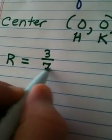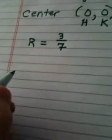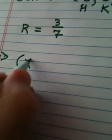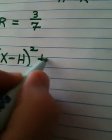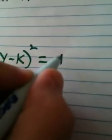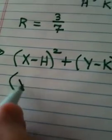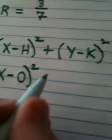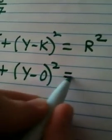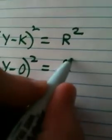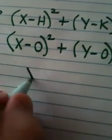The length of the radius is 3 over 7, so R is 3 over 7. Now that I know H, K, and R, I write my formula from memory. You've got to have this memorized. So from your brain: X minus H squared plus Y minus K squared equals R squared. Now what are we plugging in? For H, a 0. For K, a 0. And for R, 3/7. So we get X minus 0 squared plus Y minus 0 squared equals 3/7 all squared.